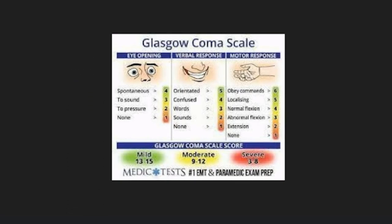Abnormal flexion means the patient is in a completely flexed position — for example, if you tell the patient to extend their arm and they are unable to extend, remaining fully flexed, that is abnormal flexion. Similarly, if the patient is completely extended, that is abnormal extension. No movements at all is the 'none' category.